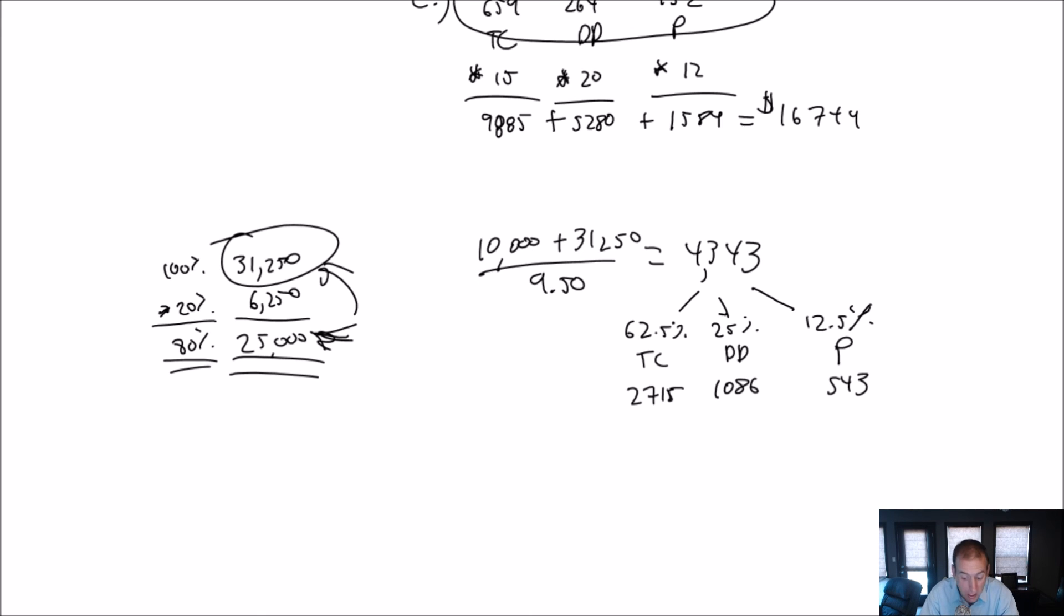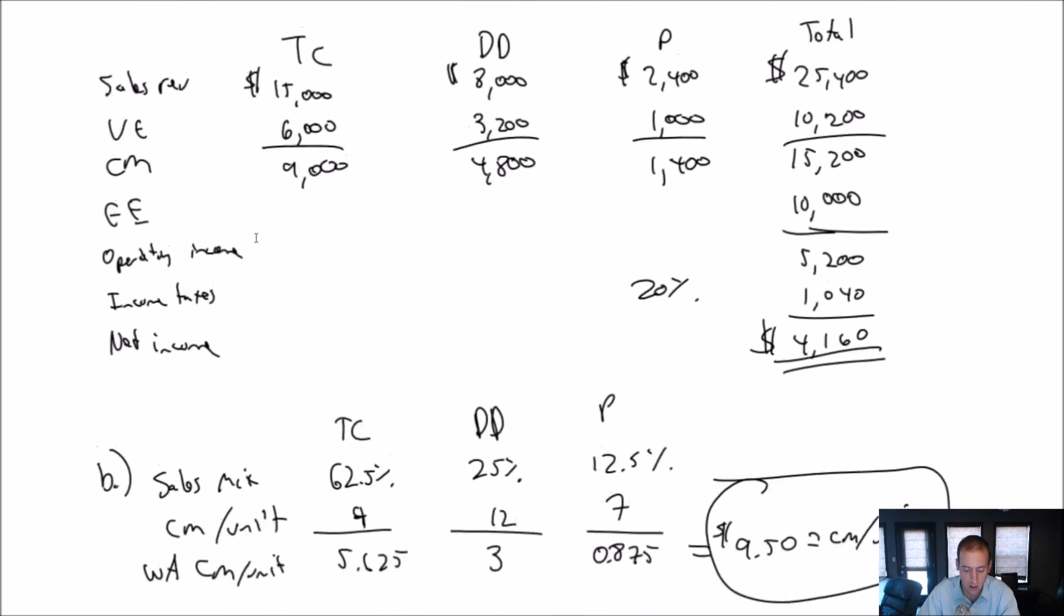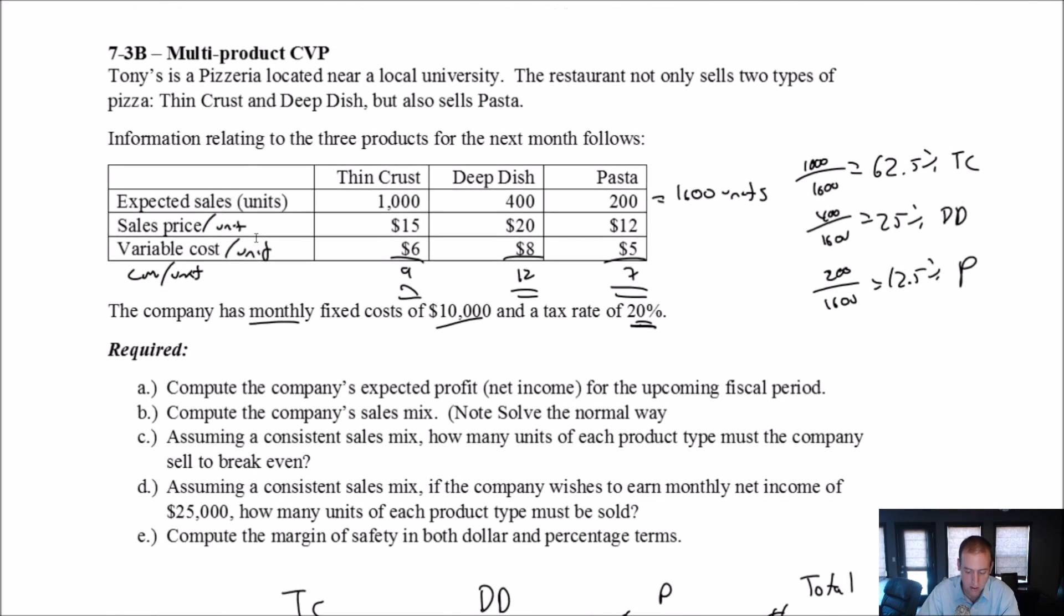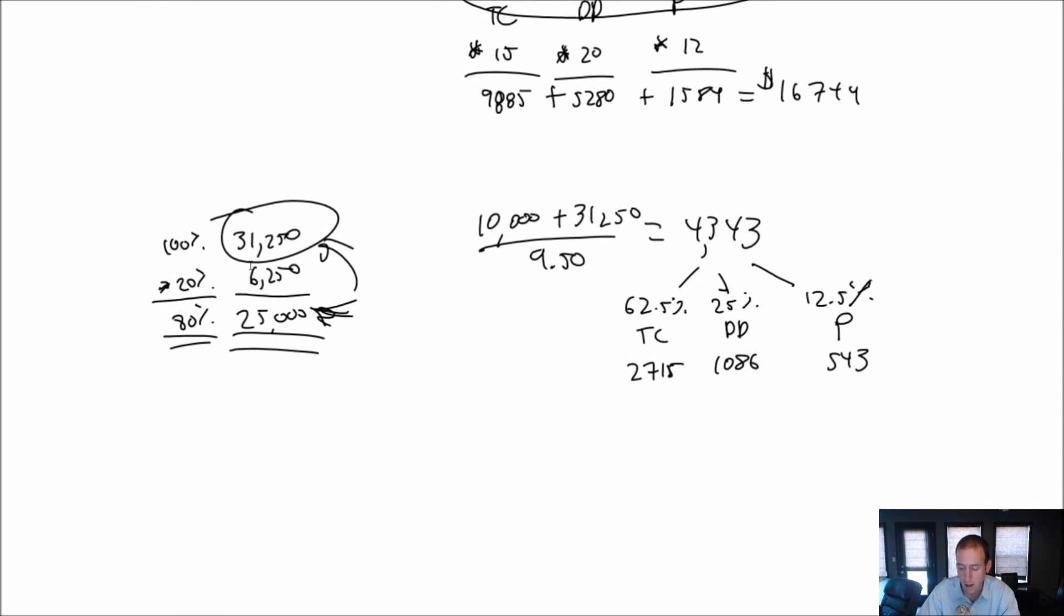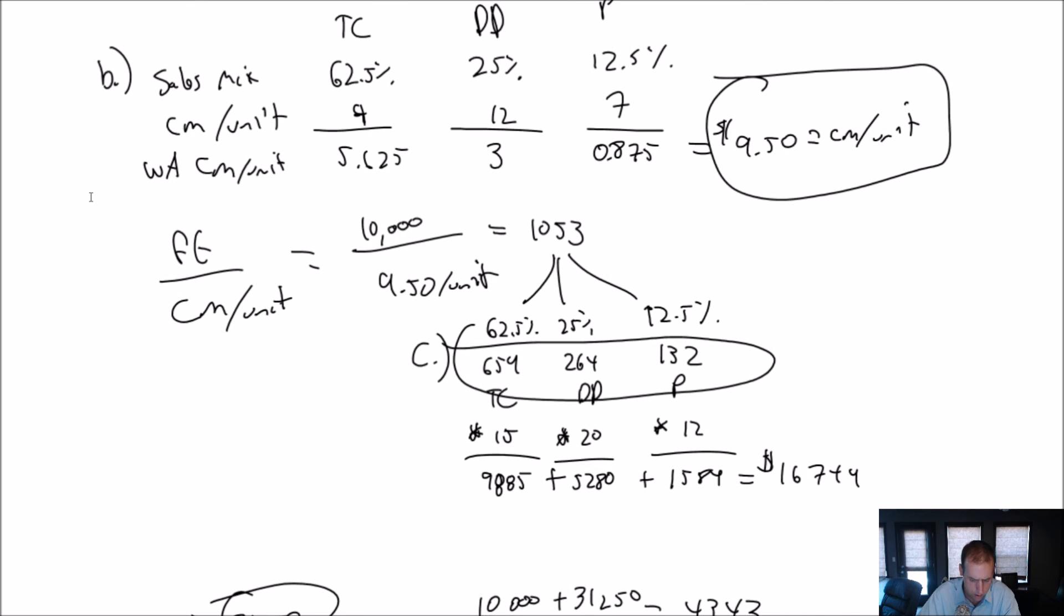A pretty challenging task. If you think, well, right now, I'm selling 1,400 and 200. I need to more than double my output. Now, is that realistic? Probably not. If I'm expecting to sell 1,000, is it realistic to sell 2,700 thin crusts? I doubt it. Like, 2.7 times what I'm expecting to currently do. I'm going to need to change something fundamental about my company if I wish to meet that target profit. Okay, so that was part D.